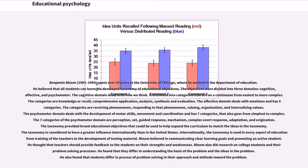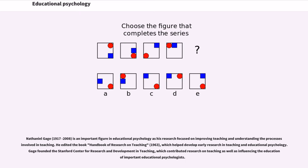Bloom believed in communicating clear learning goals and promoting an active student. He thought teachers should provide feedback on students' strengths and weaknesses. Bloom also researched college students' problem-solving processes, finding that they differ in understanding the basis of a problem and in their approach and attitude toward it. Nathaniel Gage (1917–2008) is an important figure in educational psychology whose research focused on improving teaching. He edited the Handbook of Research on Teaching (1963) and founded the Stanford Center for Research and Development in Teaching.